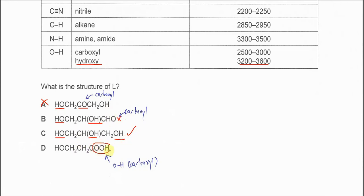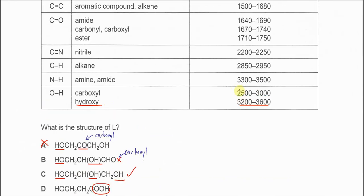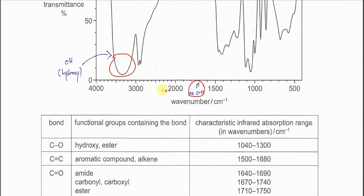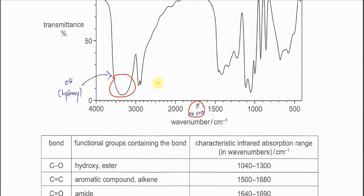Option D cannot be the answer because it has COOH, which is actually the carboxyl. Whenever there is a carboxyl it's still a broad absorption, but the absorption is at smaller values, so it's going to be around here, around this part.